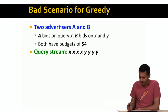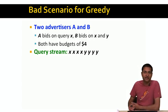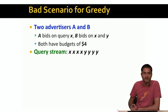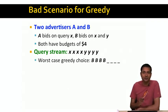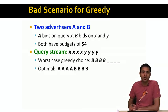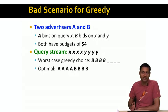When these queries come in, the greedy algorithm sees the first X and notices both A and B have bid for query X. The greedy algorithm arbitrarily assigns query one to advertiser B, then the second X to B as well, and so on. The greedy algorithm might end up assigning all four X queries to advertiser B and none to advertiser A. As a result, when the first Y query comes in, B's budget of $4 is already exhausted, and therefore no ads can be shown for the Y queries. The greedy algorithm's revenue is only $4, whereas the optimal allocation — showing A's ad for the first four queries and B's ad for the next four — has revenue of $8, which is twice the greedy algorithm's revenue.